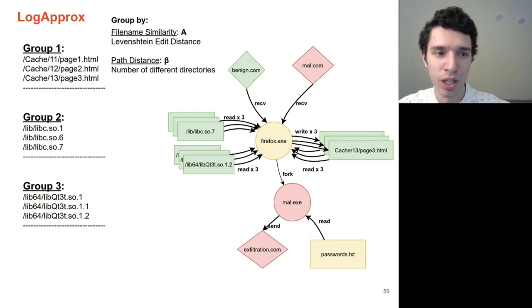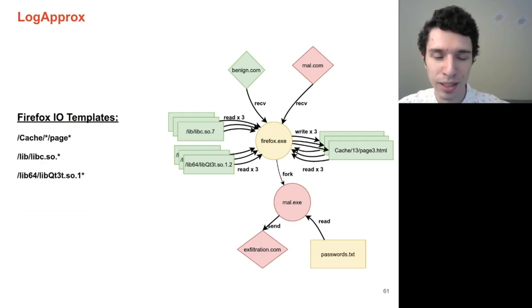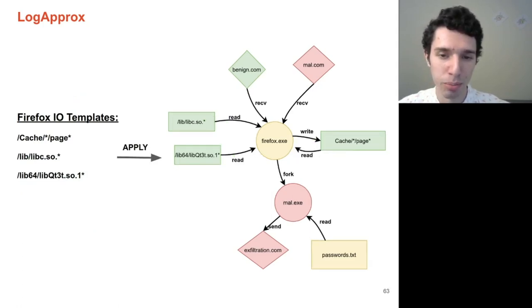From here, LogApprox will create a single regex that can represent each group. If there is a misaligned token between any two files in the group, LogApprox will replace it with a glob. These regex templates will then be applied back onto the original provenance graph. From here, causal reduction can take place and thus multiple reads and writes to semantically similar files can be causally collapsed into a single IO operation.